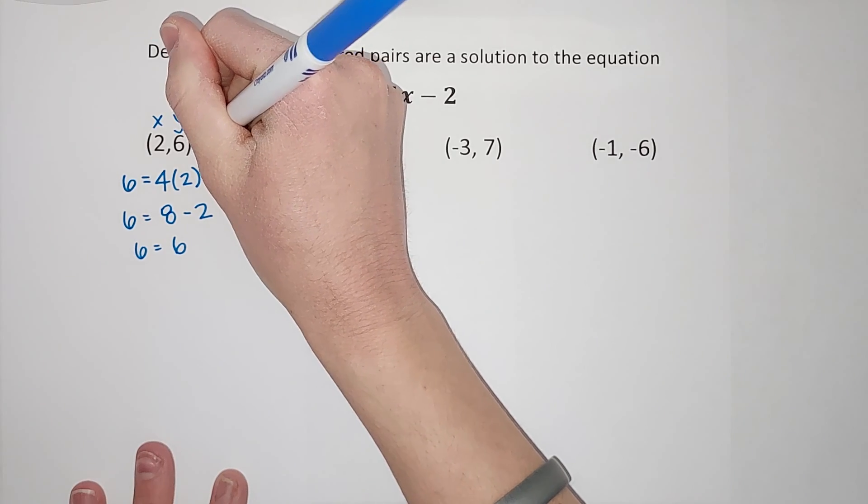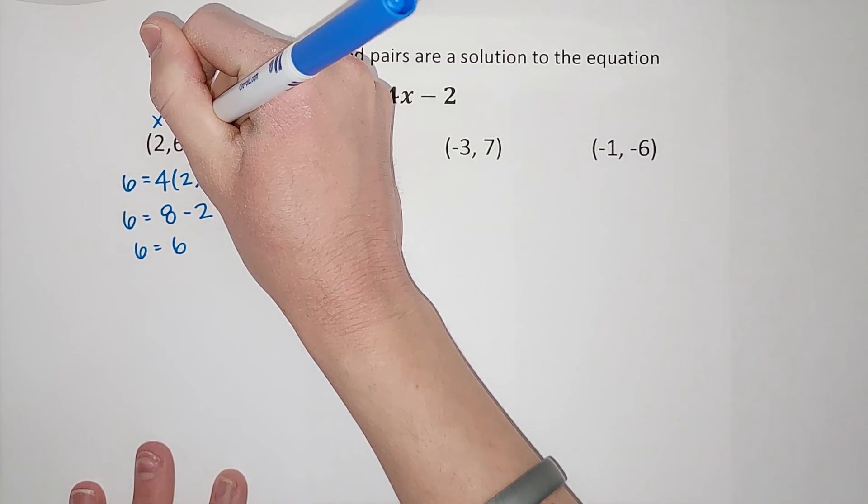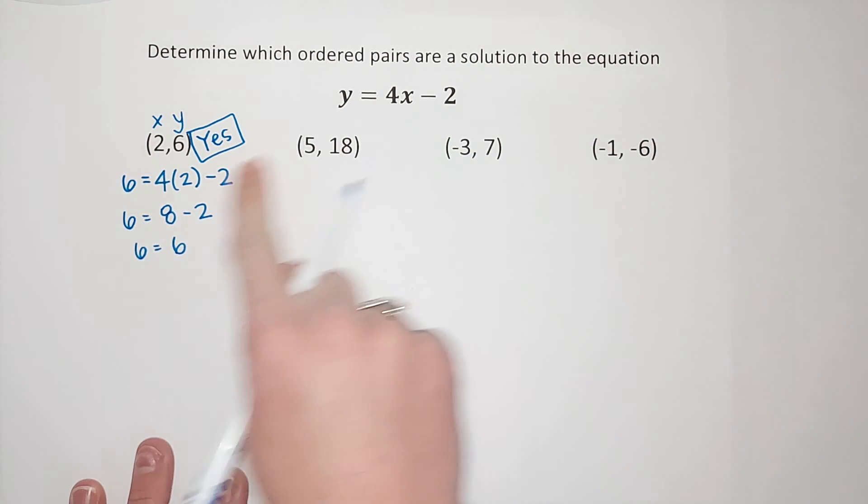So, yes, this ordered pair is a solution. If we were to graph this line, 2, 6 would be on it.